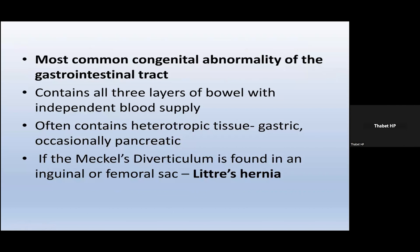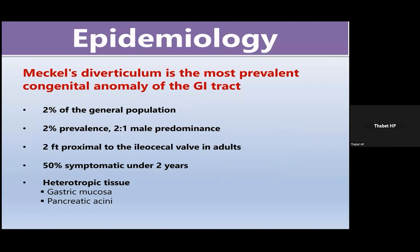The most common congenital abnormality of the gastrointestinal tract is Meckel's diverticulum. It contains all layers of the bowel wall, so we call it a true diverticulum — all three layers with an independent blood supply. It often contains heterotopic tissue, either gastric or sometimes pancreatic. It can also enter the inguinal or femoral canal, forming what we call a Littre's hernia. It occurs in two percent of the general population. The rule of two states: two percent prevalence, two times more common in males than females, located two feet proximal to the ileocecal valve, two inches long, symptomatic mainly before two years of age, and in adult patients it is symptomatic only in two percent. It contains two types of tissues — either gastric mucosa or pancreatic tissue.